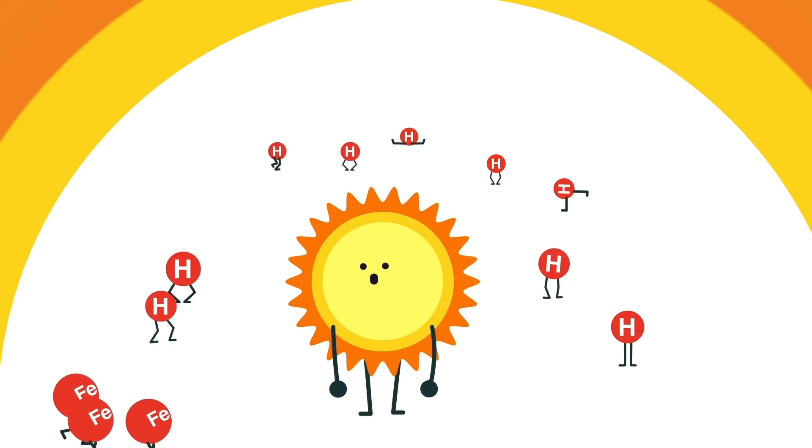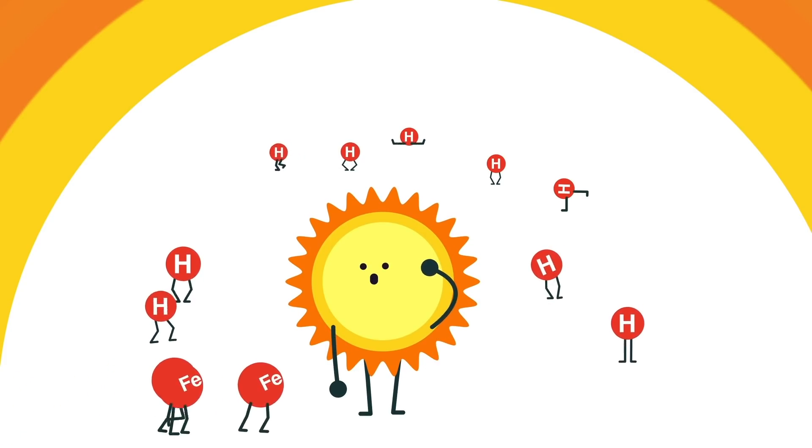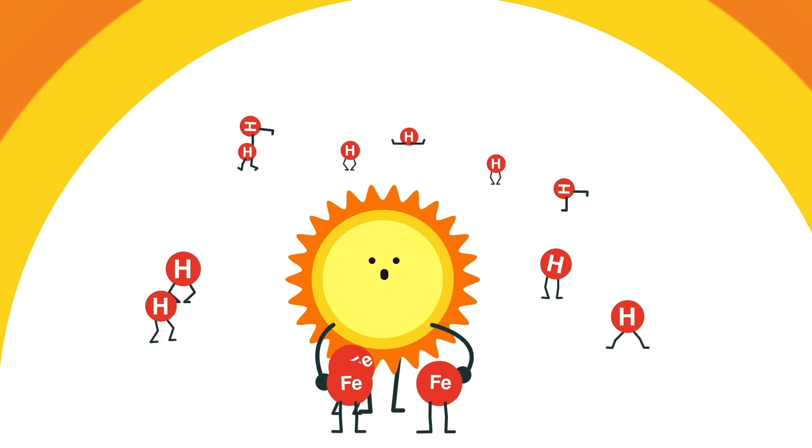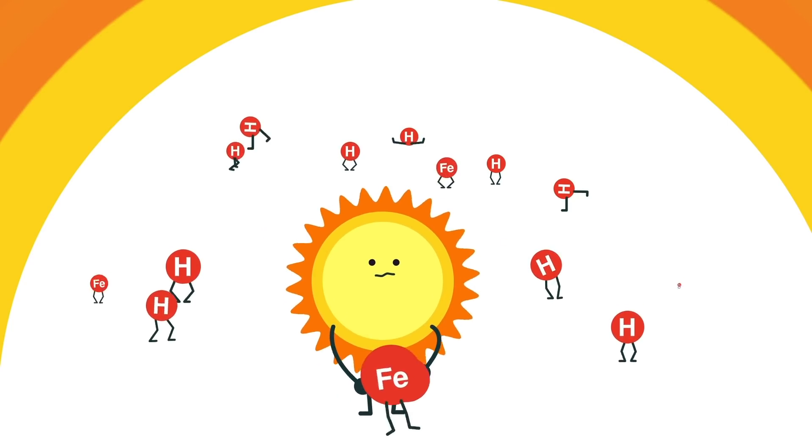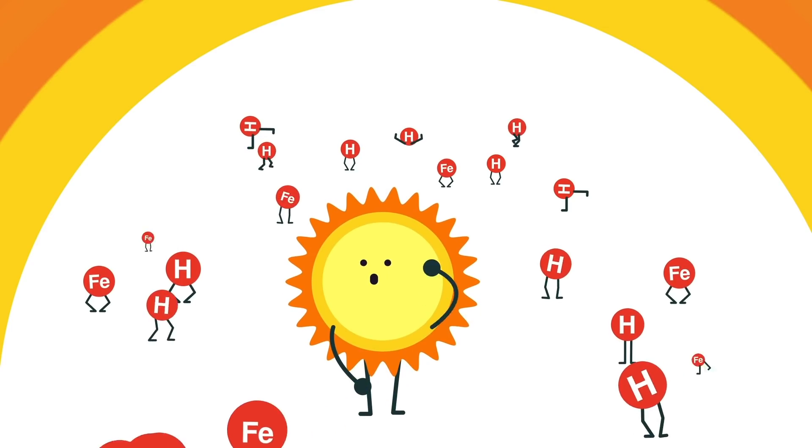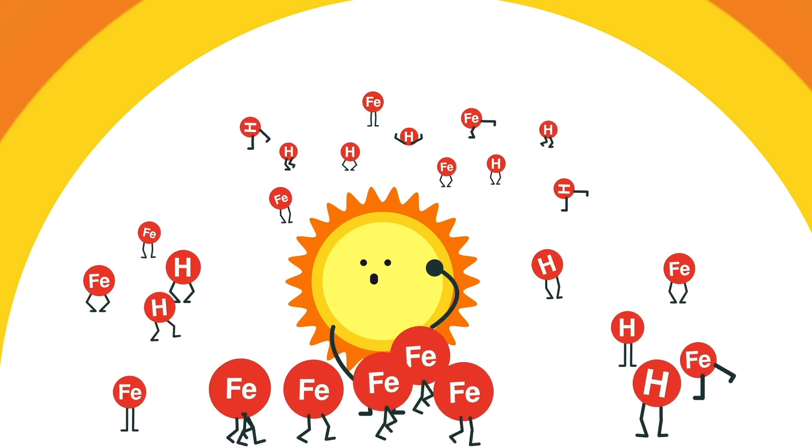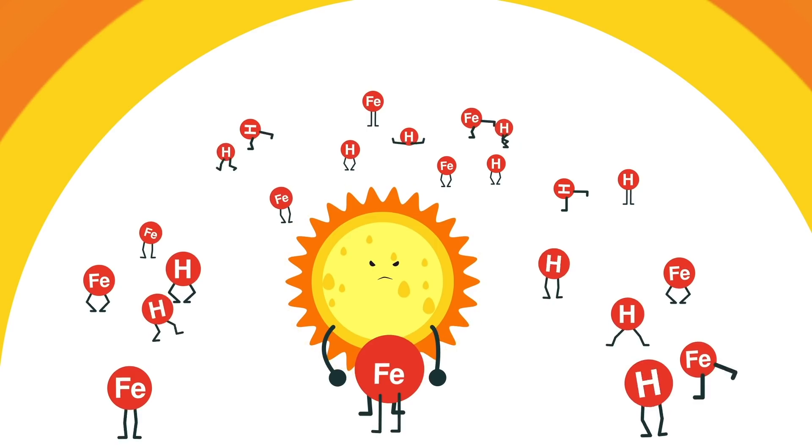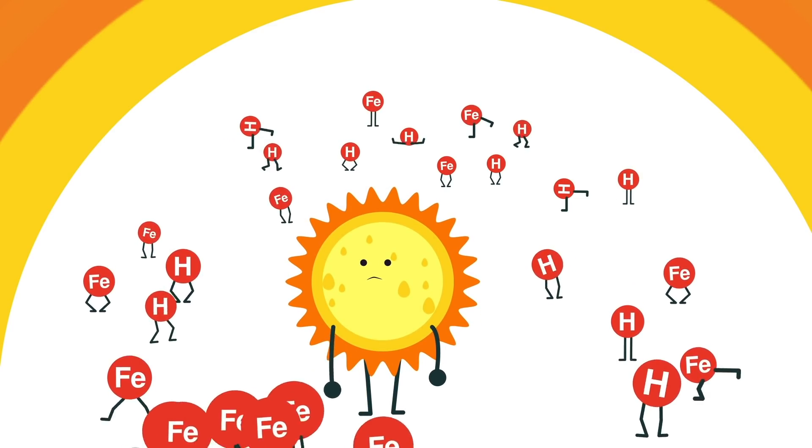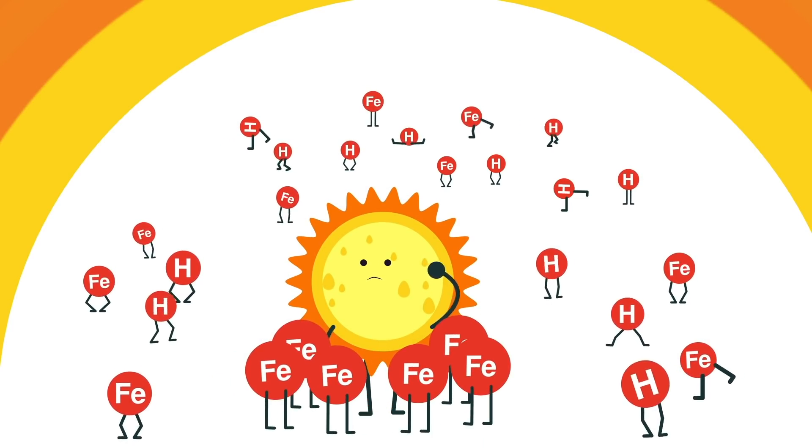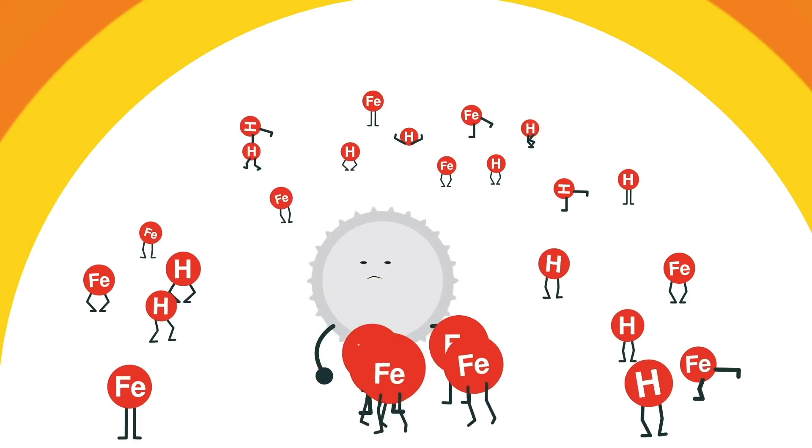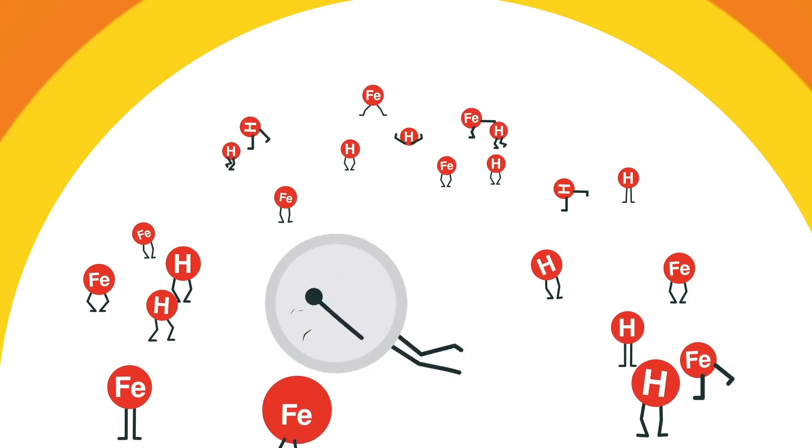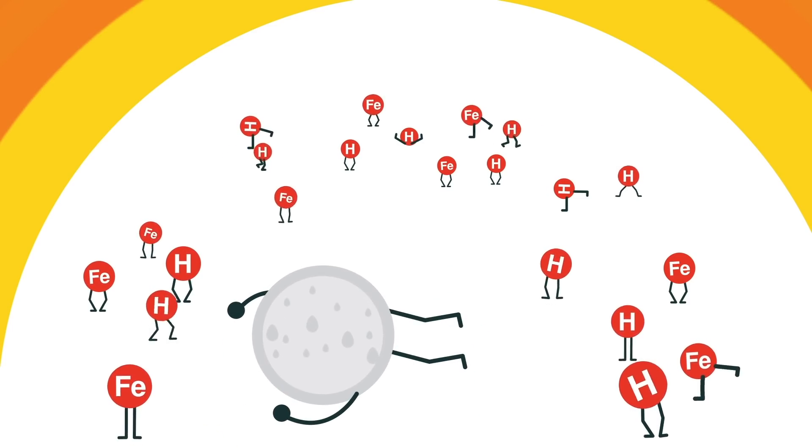Fusing iron together to make anything bigger will take more energy than is made by doing it. So fusing iron loses energy. This will make the Sun's core go into shutdown. The core, now made fully of iron, will die. The outer layers will collapse in on themselves and the star will be dead.